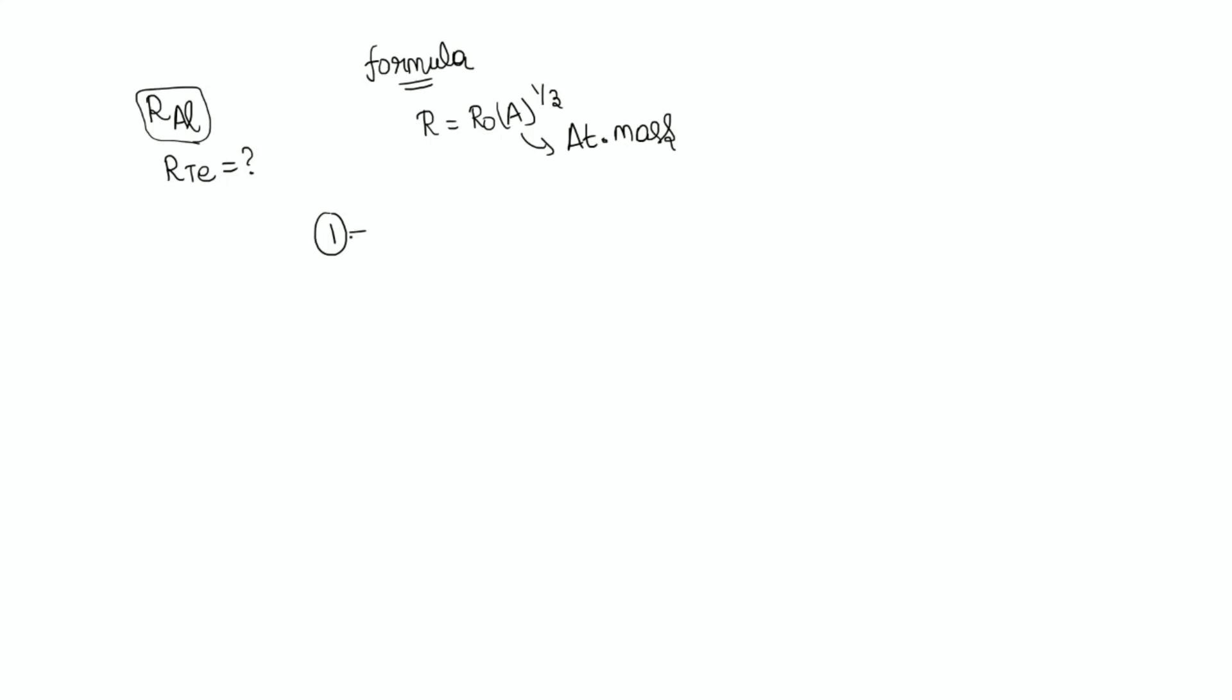Now, we know the first element is aluminum. Anyone tell me, what is the atomic mass of the aluminum that we have taken in this question? In the question, atomic mass of aluminum is equal to 27. Exactly.